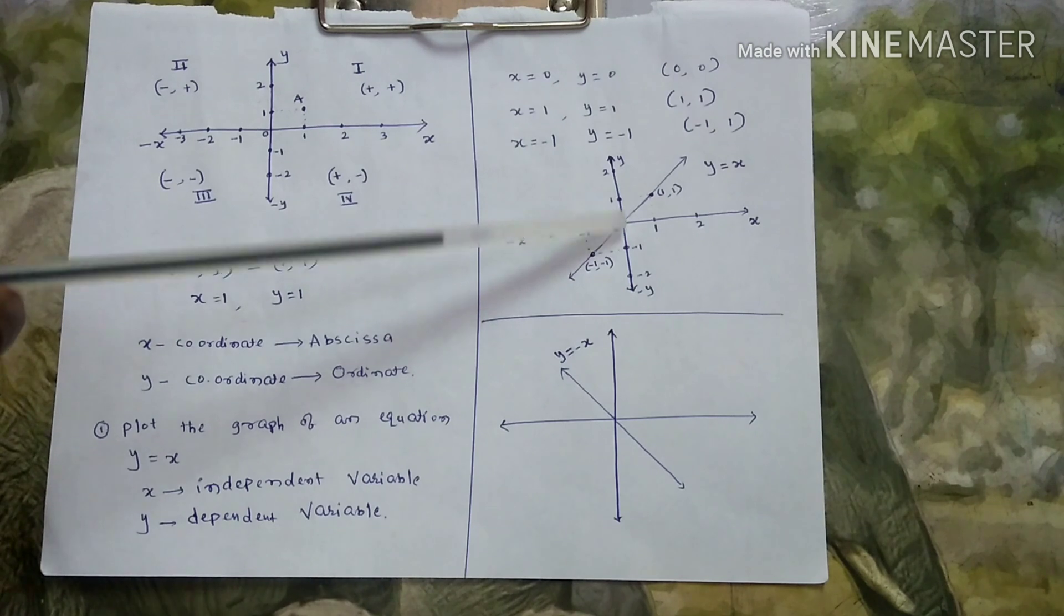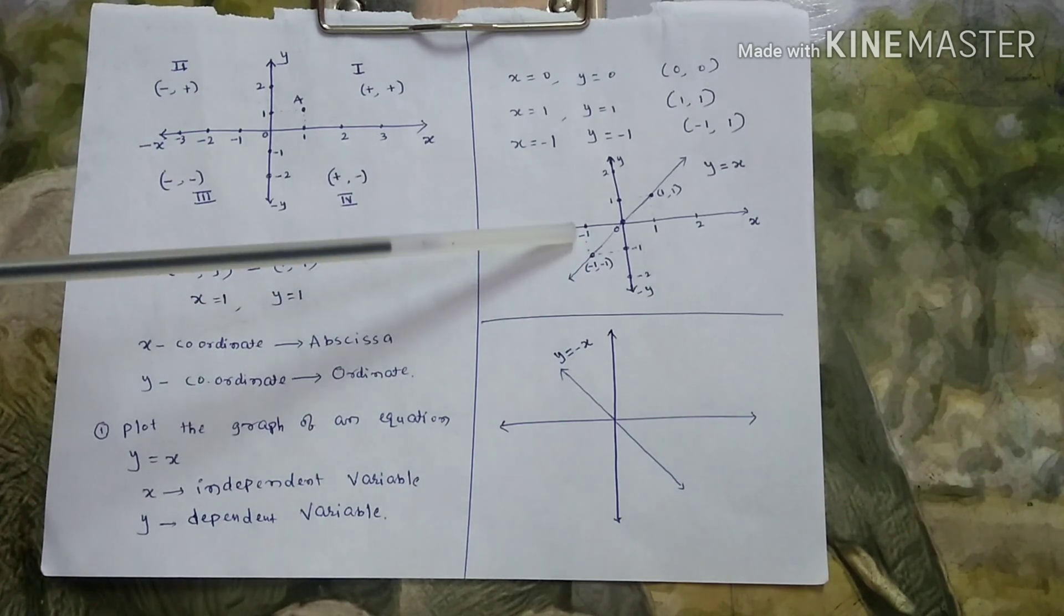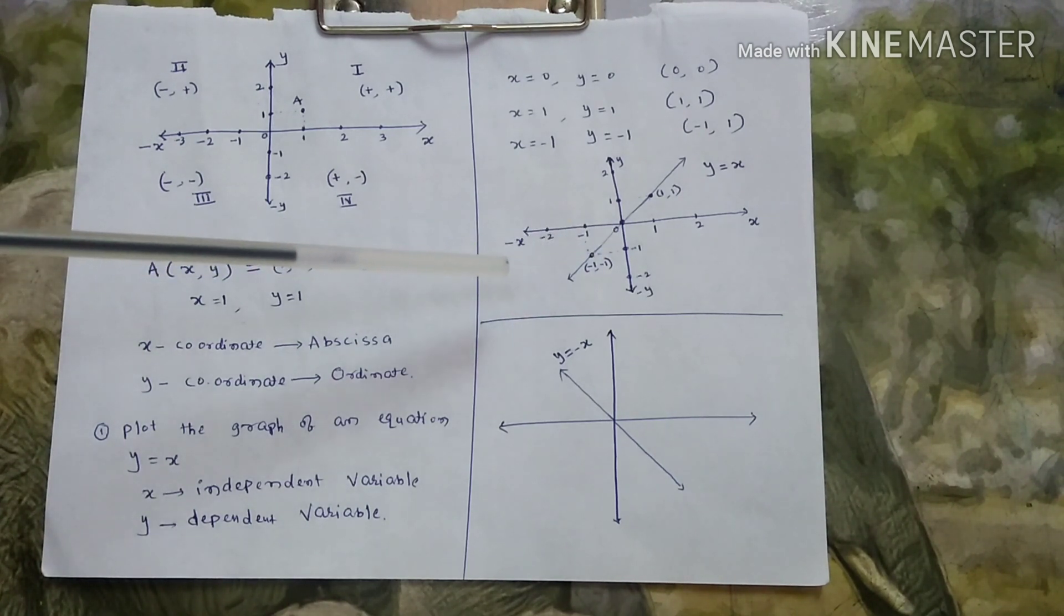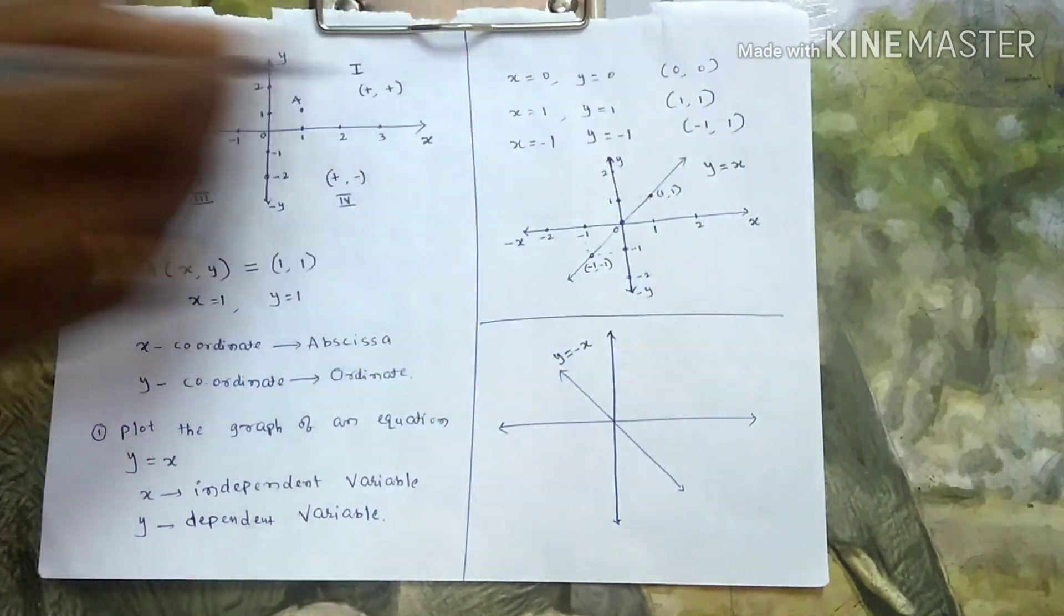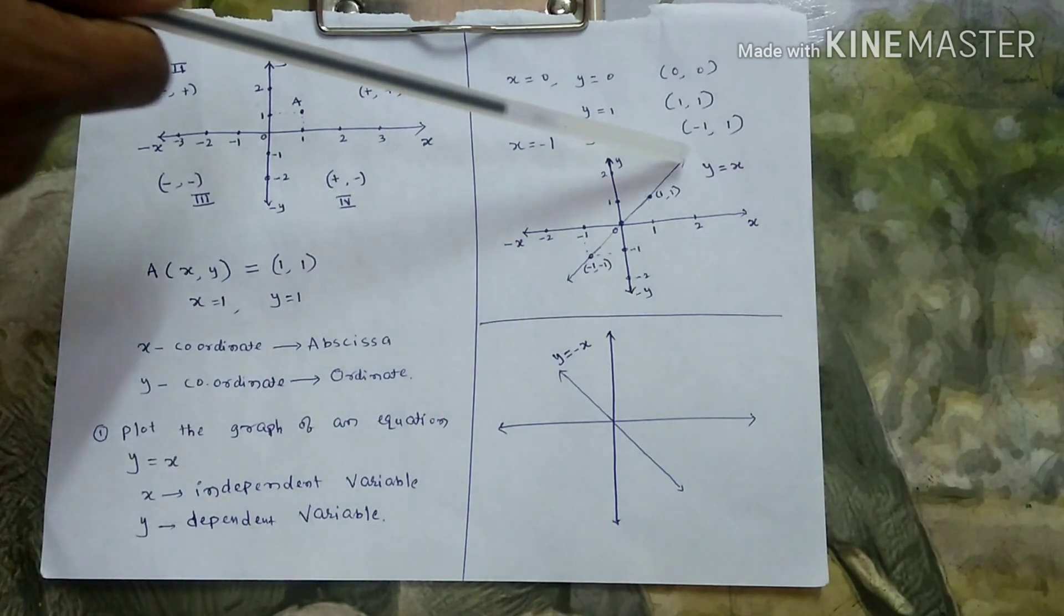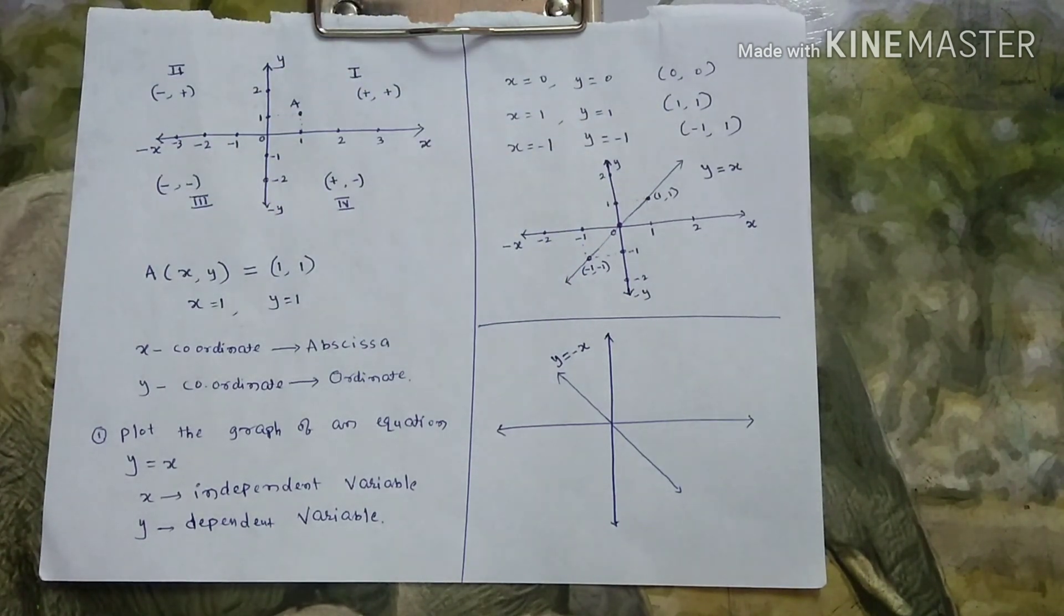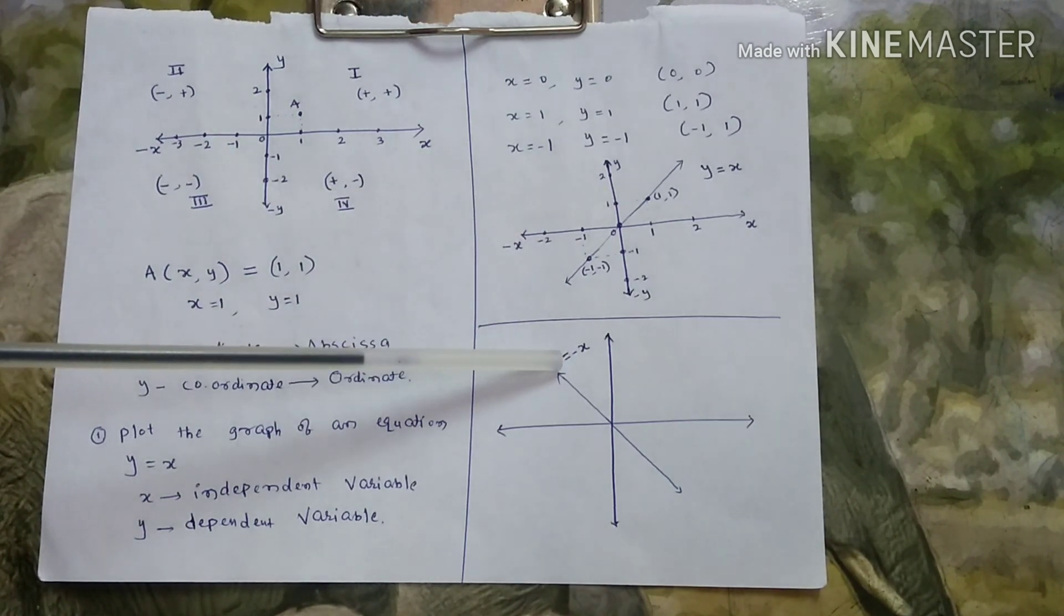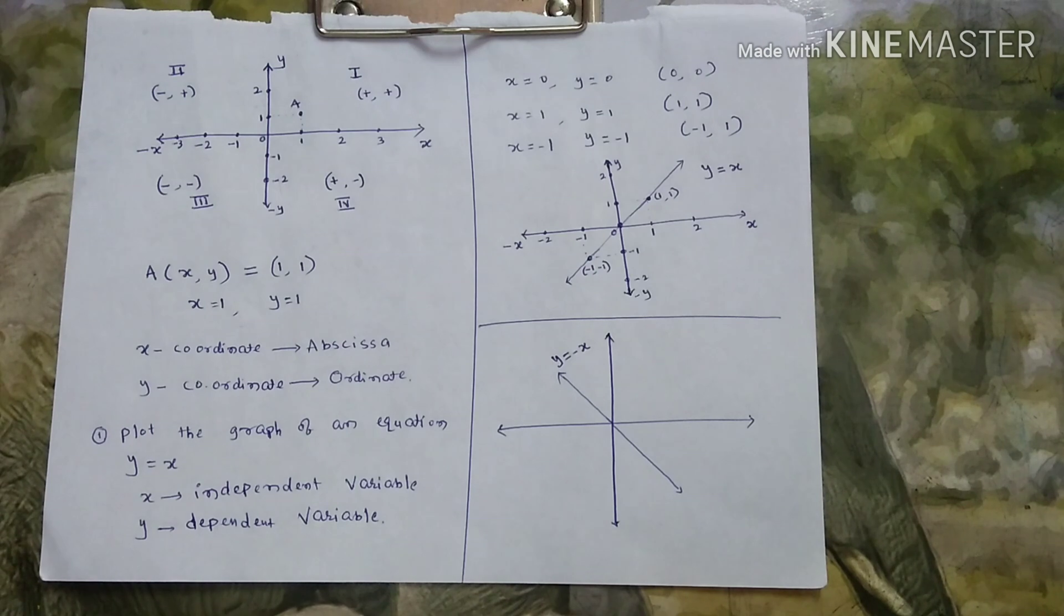So, these three points we will see here. 0 comma 0 is origin. 1 comma 1 is here. Minus 1 comma minus 1 is here. This is minus 1 minus 1. You join these three points. It looks like this. So, this is straight line passing through the origin. Now, you take y equal to minus x. Now, you can do this as you put x is equal to 0, x is equal to 1, x is equal to minus 1. You will get graph like this.